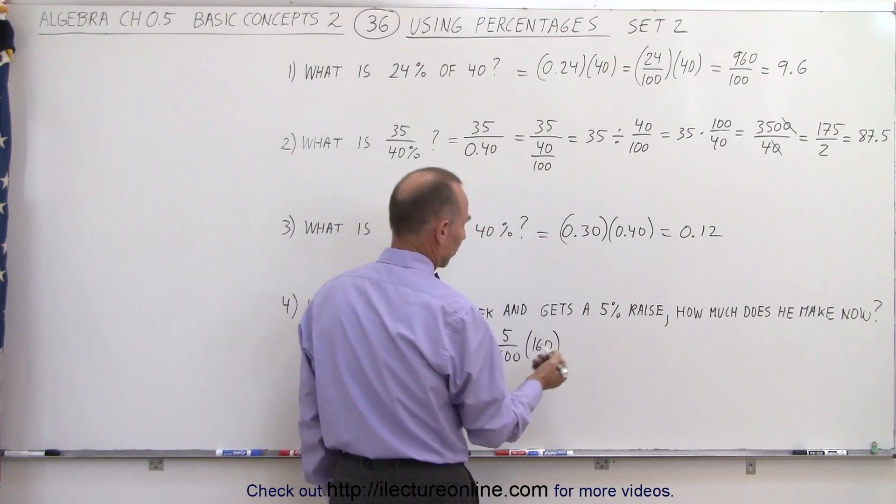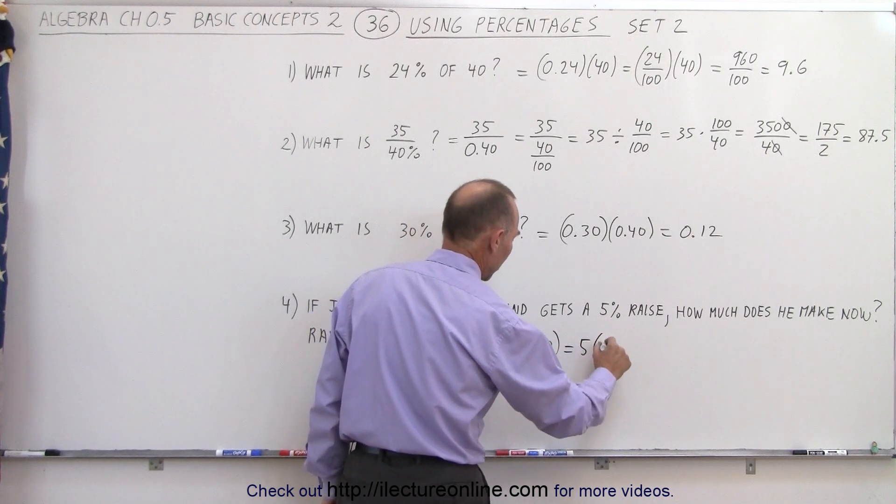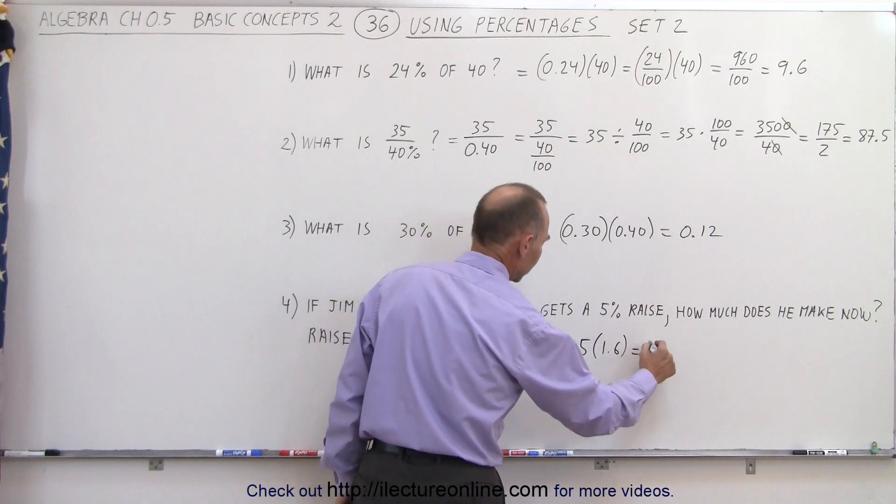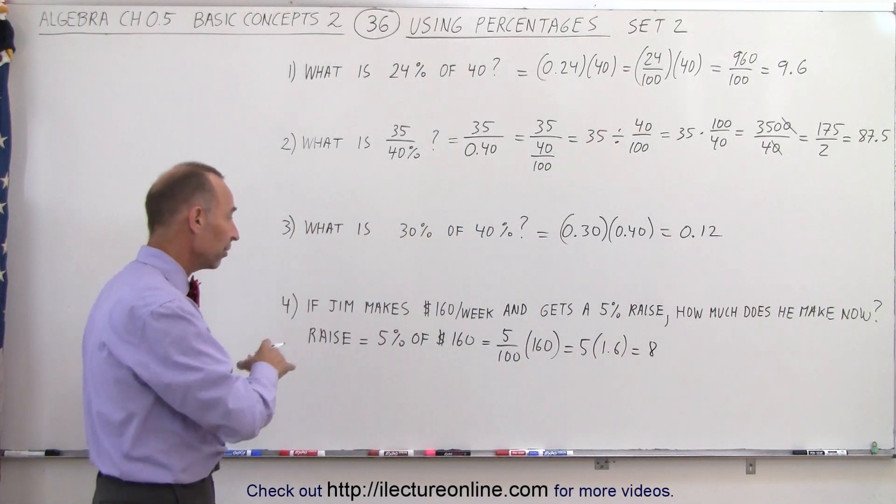Or, well, we can work it out like this. 100 goes into 160 1.6 times. So that's 5 divided by 1.6, which is equal to $8. So he gets an $8 raise. We add that raise to the original amount.